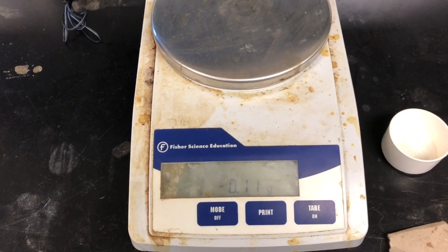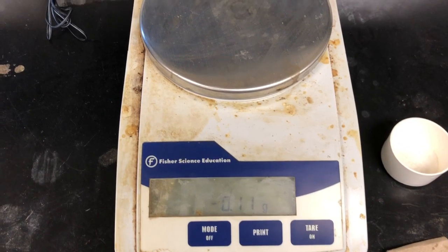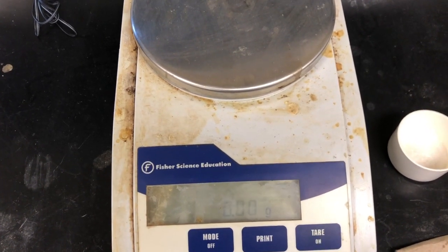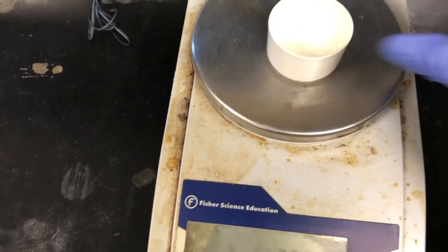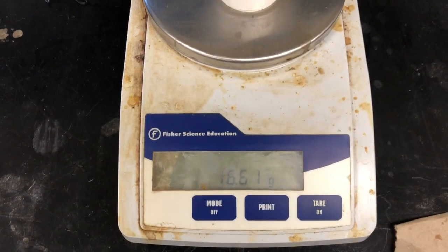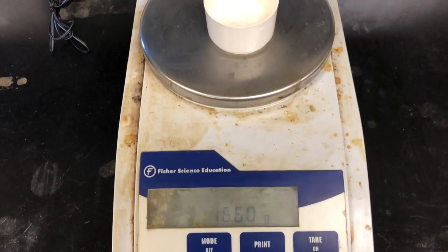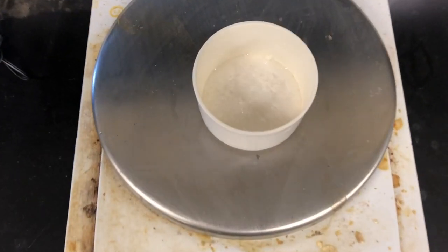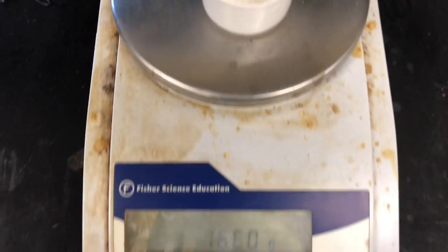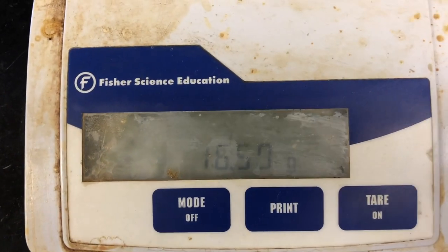So now that we're ready to weigh the dried recrystallized product, you want to make sure you tare the balance so it's at zero, and we are going to place it right here and record the mass. So we're exactly at 16.60. Here's our recrystallized product, and again, here is the mass.